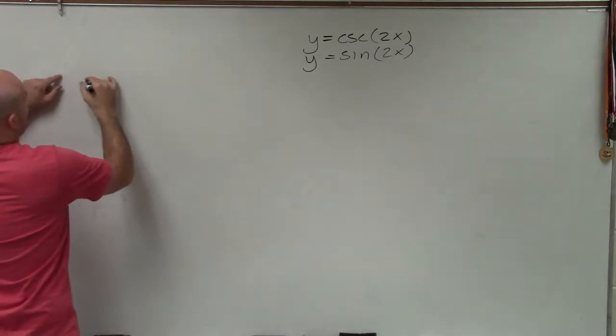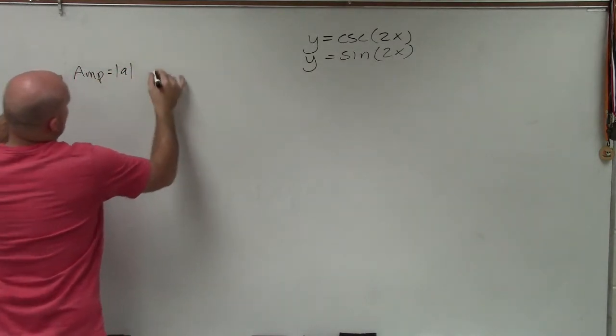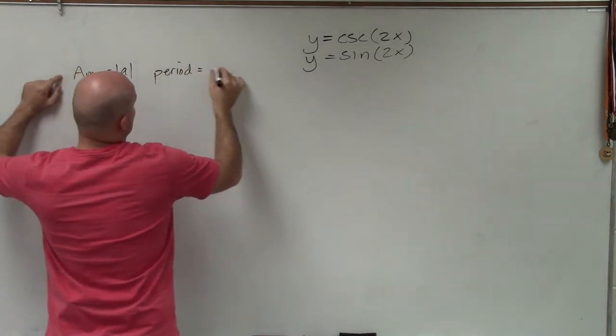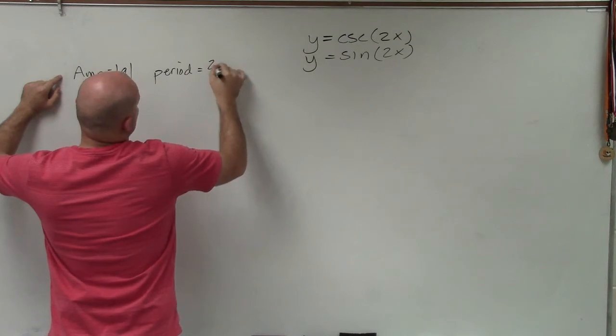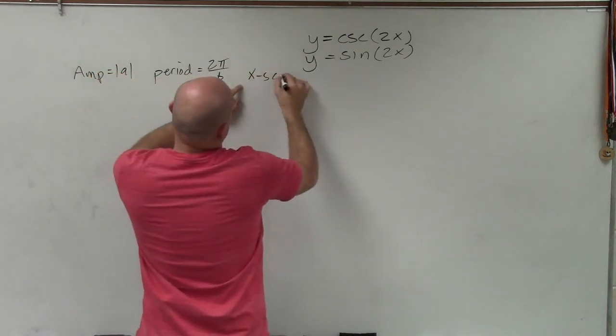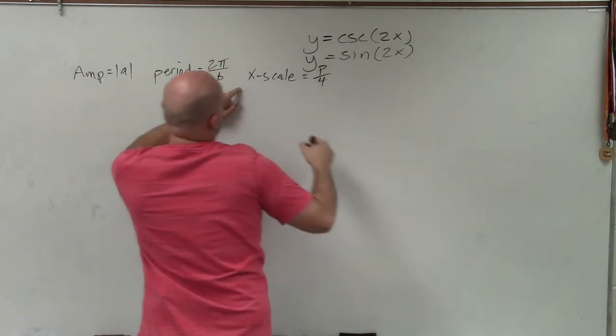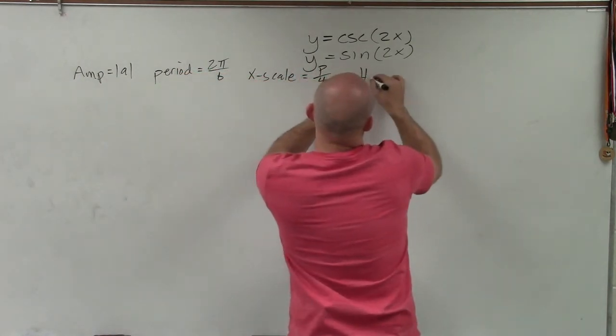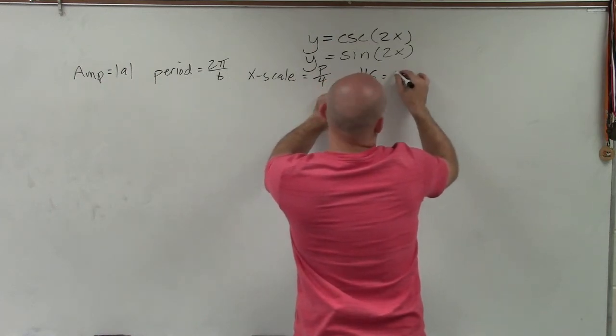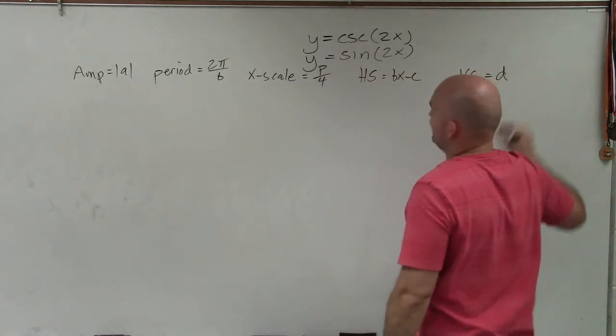The first thing we always want to be able to do is determine our amplitude, which is absolute value of a, our period, which is equal to 2 pi divided by b. We want to know what our x scale is, which is our period divided by 4. We want to know what the horizontal shift is going to be, which is going to be bx minus c. And we want to know what the vertical shift is going to be, which is d.